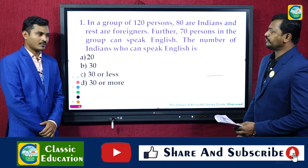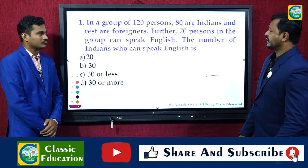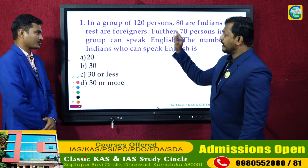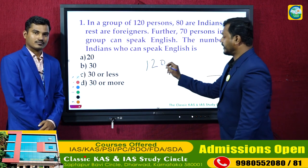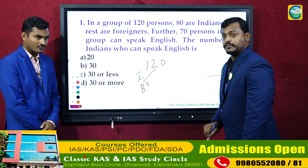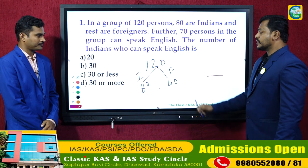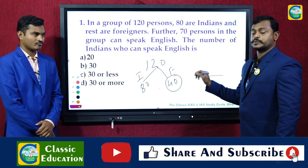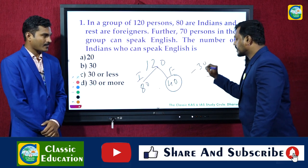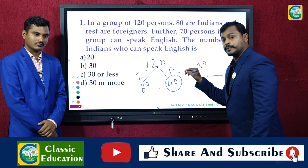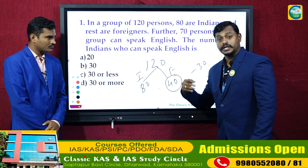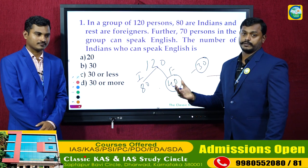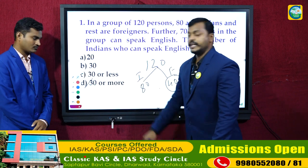First question: In a group of 120 persons, 80 are Indians and the rest are foreigners, so 40 are foreigners. 70 persons in the group can speak English. To find how many Indians can speak English: if all 40 foreigners speak English, subtracting from 70 gives at least 30 Indians. But we don't know the exact value — it could be 30, 35, or 39. So the answer is 'at least 30,' meaning option D: 30 and more.